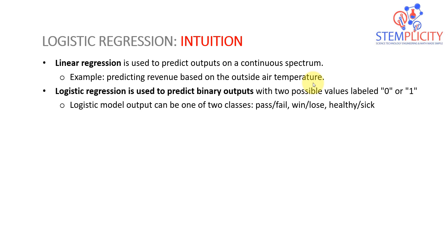The key point is that the outputs were a continuous spectrum, meaning the revenue can range from $100 up to $1,000. Logistic regression is actually completely different — it is used to predict binary outputs.